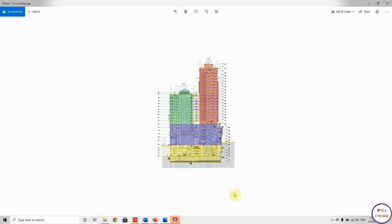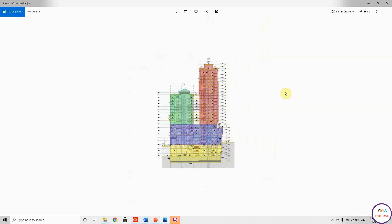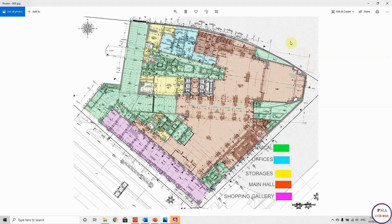This is a project of a five-star hotel. It has a podium and two towers. The podium has a basement, which is the yellow board, and four floors full of podium. Then we have two towers: H3, the long one with 20 floors, and H4, the short one with 11 floors. I'd also like to show you the ground floor because we are going to work on this layout as well.